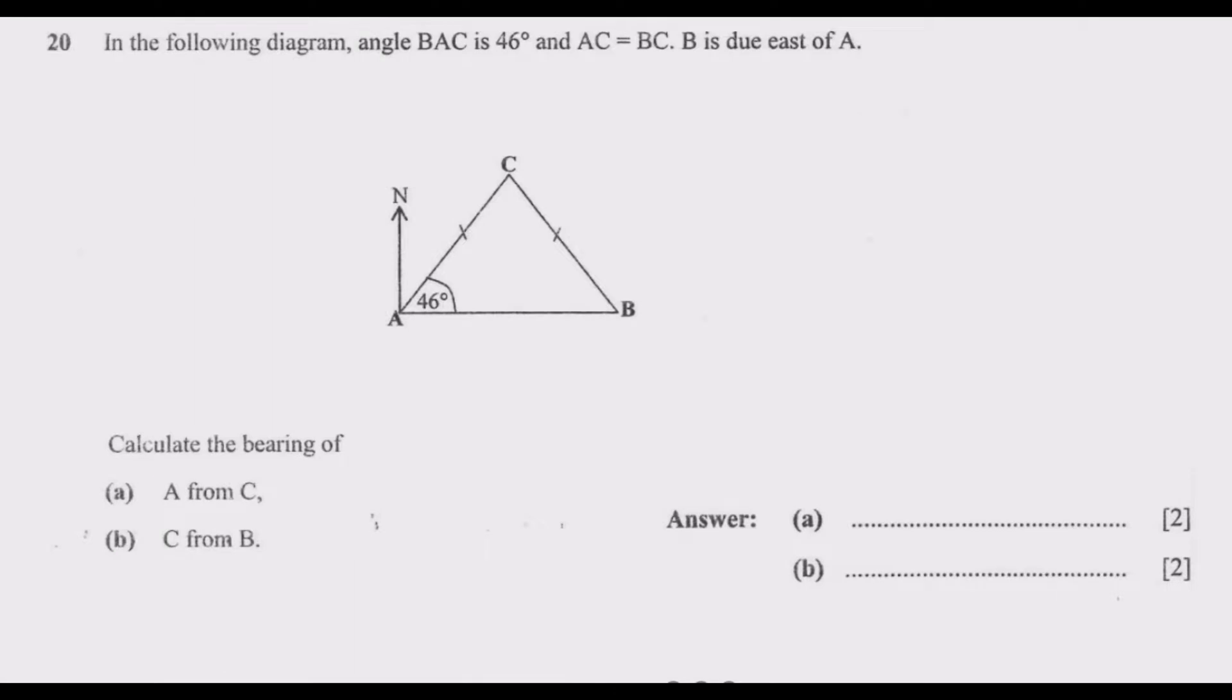Question 20: In the following diagram, angle BAC is 46 degrees, AC equals BC, and B is due east of A. Calculate the bearing of (a) A from C, and (b) C from B.